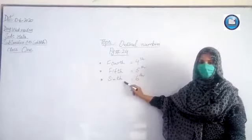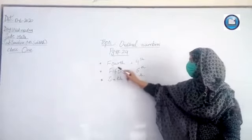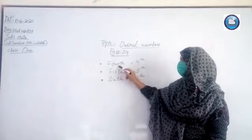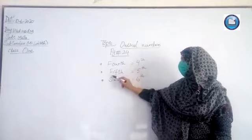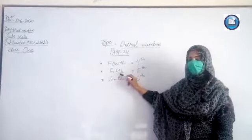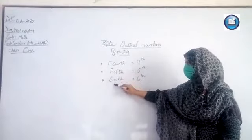Now we discuss the next ordinals. Third, then fourth: F-O-U-R-D-H, 4th. Fifth: F-I-F-D-H, 5th. Sixth: S-I-X-D-H, 6th.